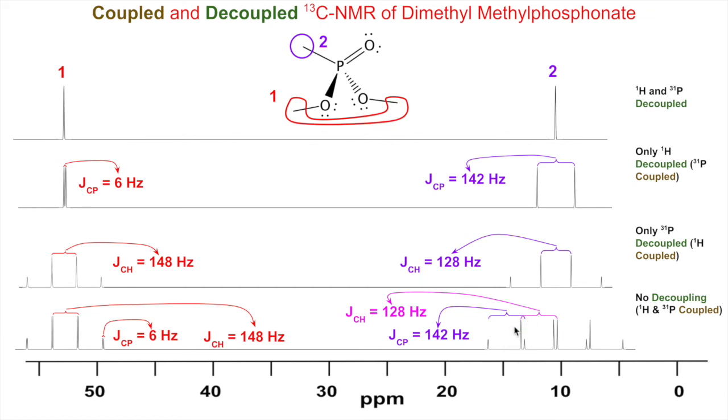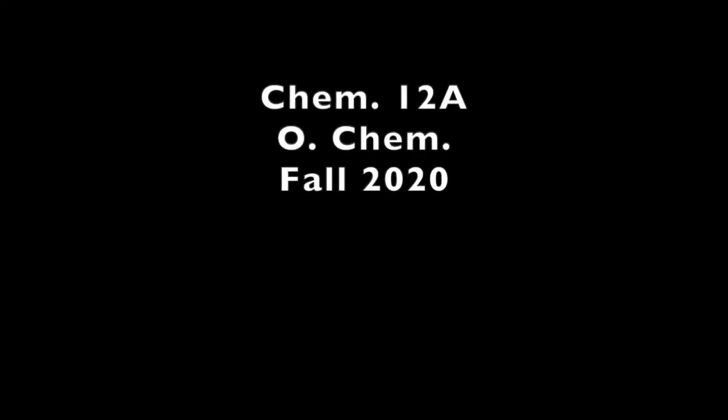Good job. We can stop with this whole coupled carbon NMR stuff. We'll go back to the easy decoupled ones where you have one type of carbon, one signal, another type of carbon, one signal—easy.